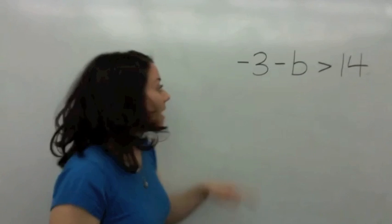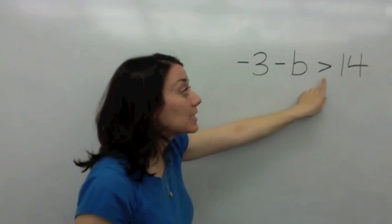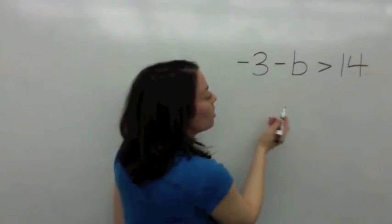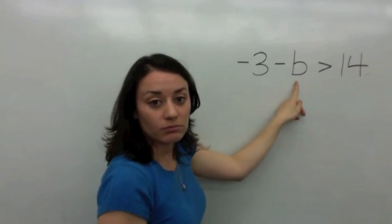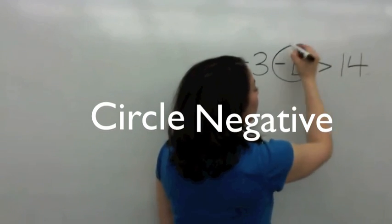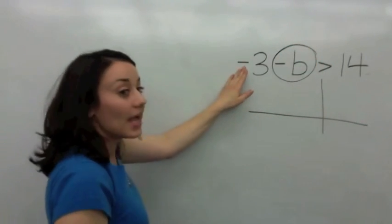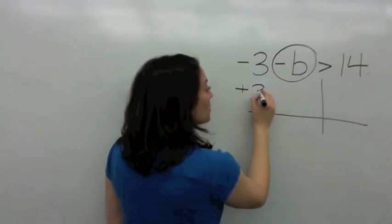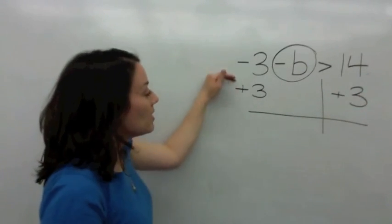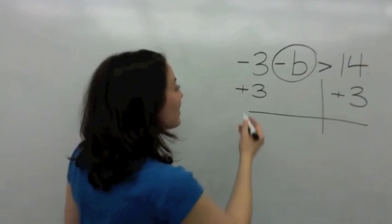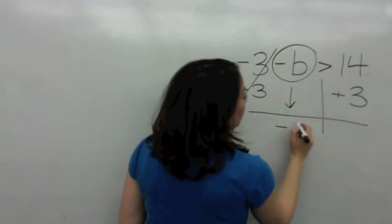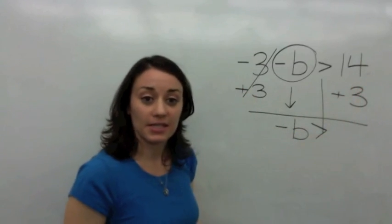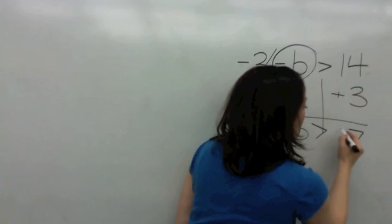Let's do another example. Read this inequality with me: negative 3 minus b is greater than 14. So the first thing you're going to want to do is circle the negative b. Then you can start to solve your inequality. You have a negative 3 over here. What is the opposite of negative 3? Positive 3. So you add 3 to both sides. Negative 3 and positive 3 — it doesn't exist, it's 0. Bring down the negative b. You're also going to bring down the inequality sign which says greater than, and add 14 plus 3. That's easy, right? 4 plus 3 is 7, and then bring down the 1 — so that is 17.